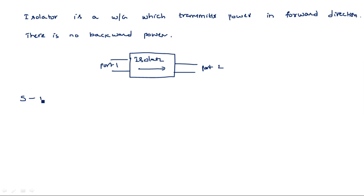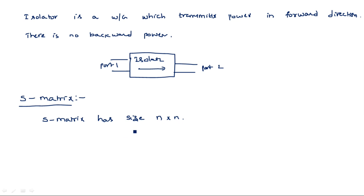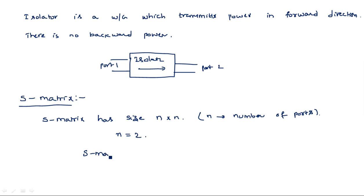Now, how many ports are there? Two ports. So what is the size of the S-matrix? Two by two. The scattering matrix is a square matrix of size N by N, where N refers to the number of ports. For the isolator, N equals 2, so the matrix is 2×2: S = [S11, S12; S21, S22]. These are the S-matrix parameters we need to calculate.